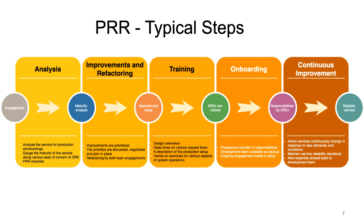The second step is based on the checklist prepared and evaluated against that checklist. Improvements and refactoring will be done based on the maturity analysis. The improvements are prioritized, priorities are discussed and negotiated, a plan is put in place, the refactoring is done, and a mature and ready product is ready by end of this stage.